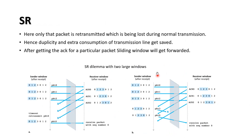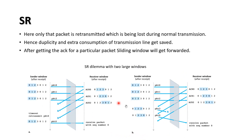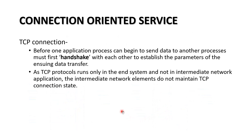In Selective Repeat, only the lost packet is retransmitted, avoiding duplicacy. After the acknowledgement for a particular packet is received, the sliding window moves forward. In the next video, we will be talking about connection-oriented service. Thank you.